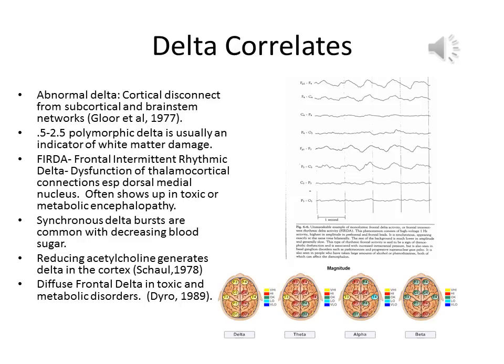Decades of research indicate that many kinds of trauma result in abnormal delta. Damage resulting in a disconnect of the brain stem and the frontal cortical regions result in elevated delta, as does white matter damage in general. Inflammatory oxidative stress results in cell edema, necrosis, and apoptosis that reduces acetylcholine output. Similar patterns emerge from toxic encephalopathies and viral and bacterial inflammation as well.